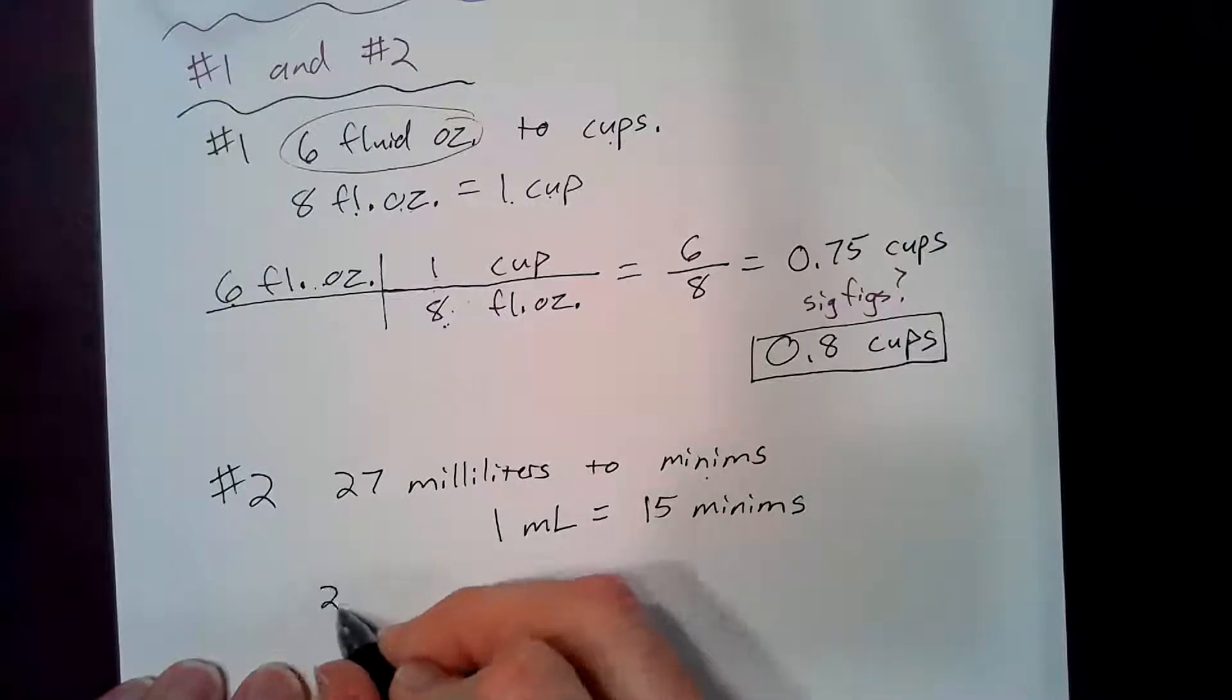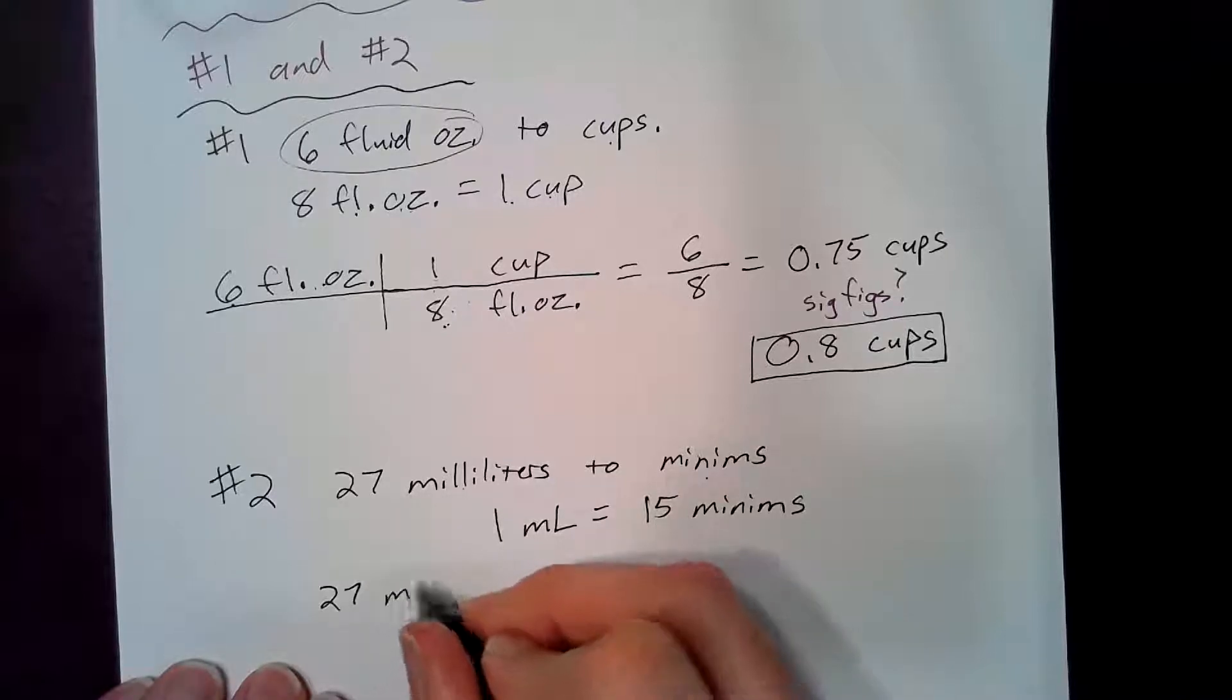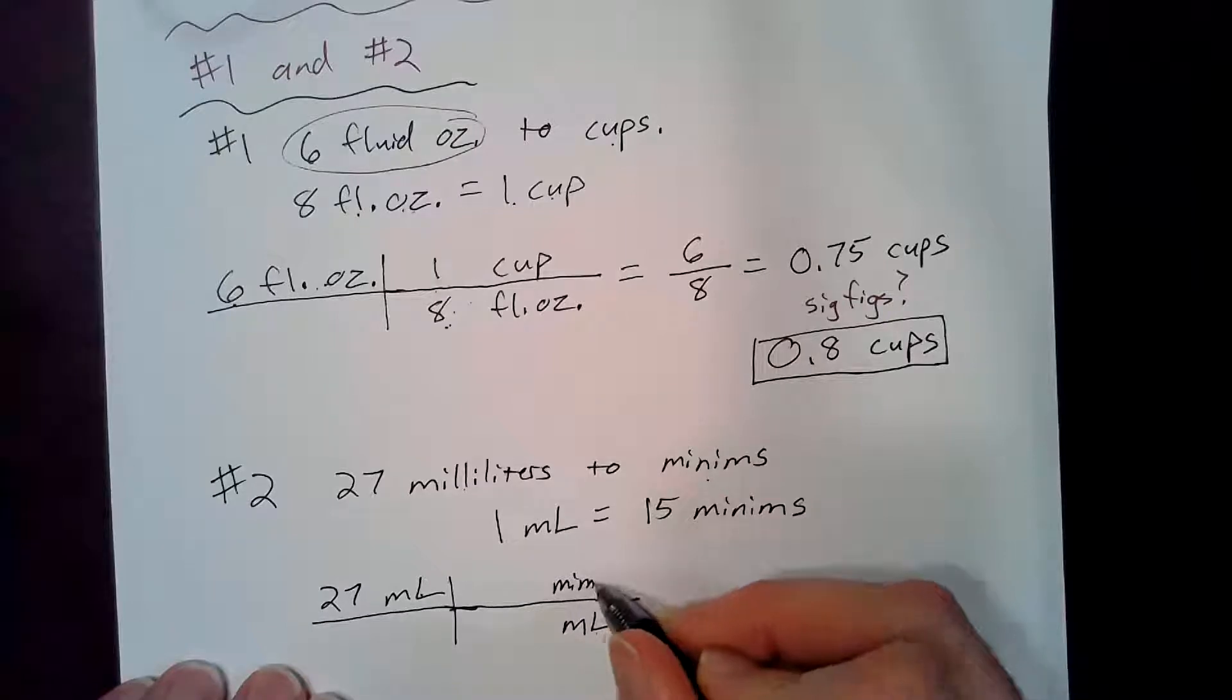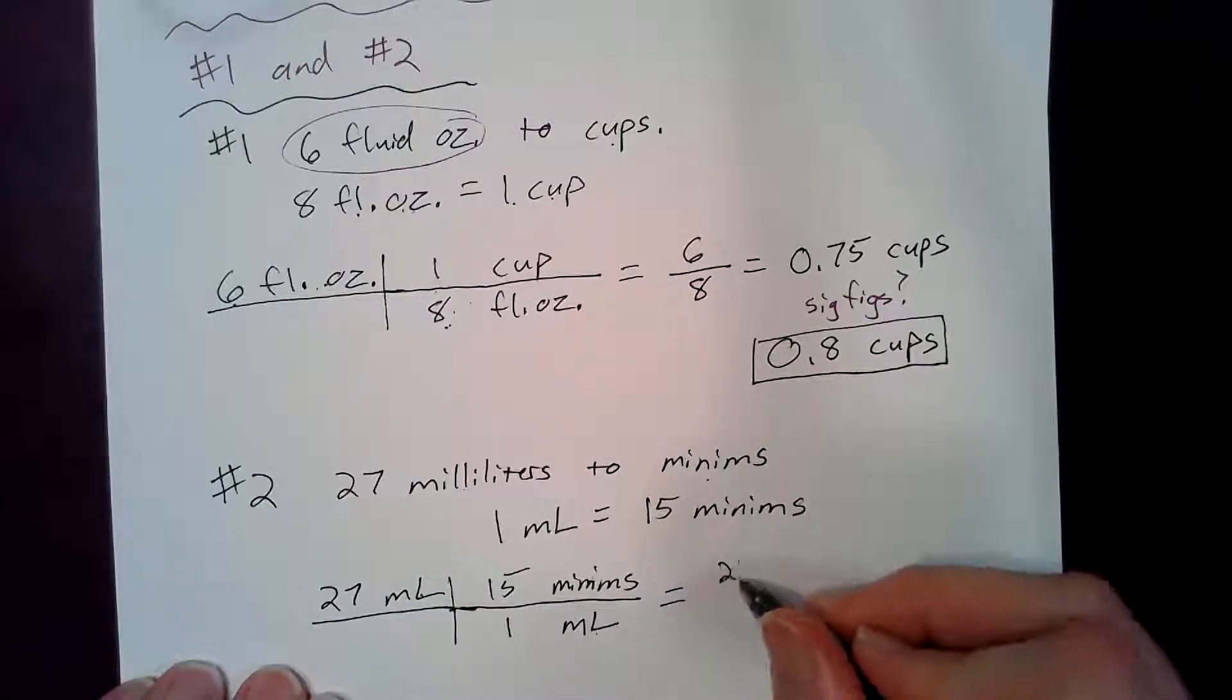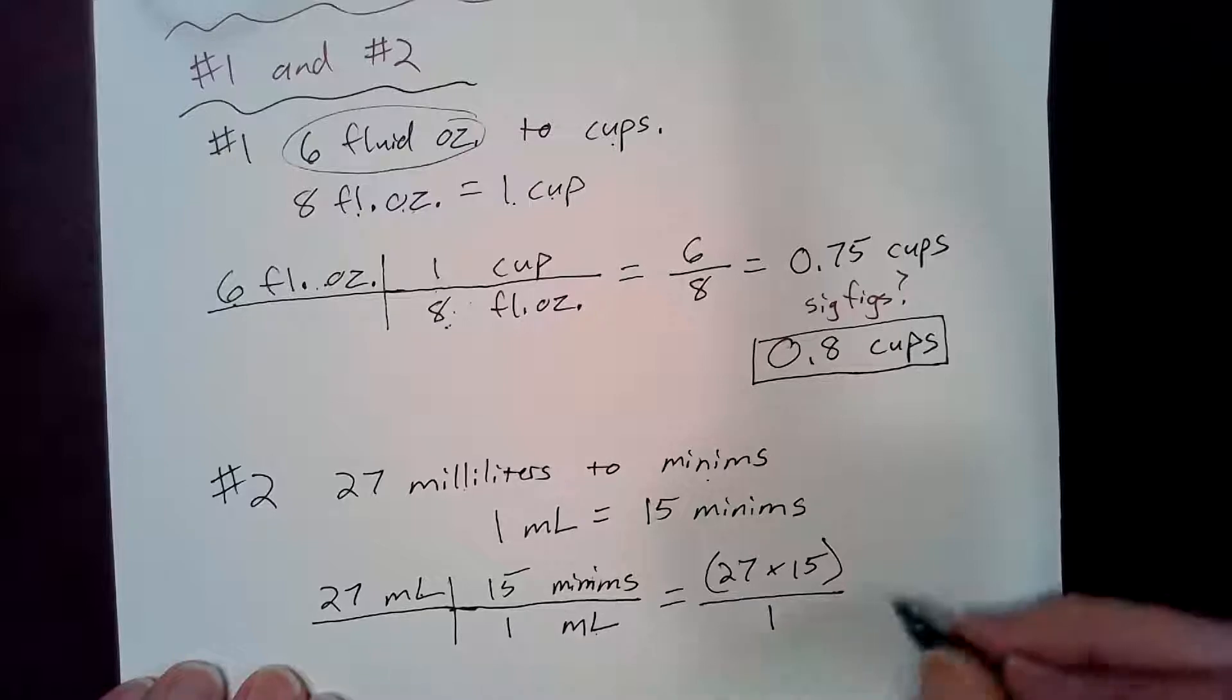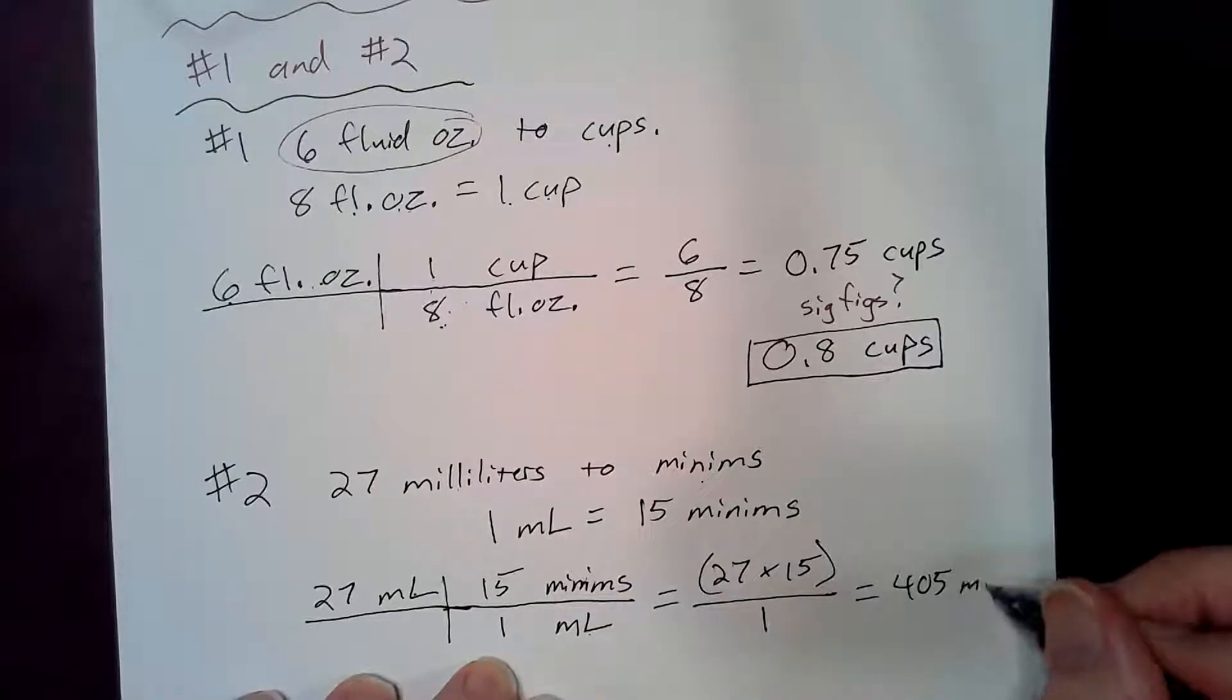So I'll start with my known information so twenty seven milliliters and then I'll apply my railroad tracks and take my units here and put them down here and move to milliliters and then I'll put minims on top. There is one milliliter in fifteen minims and so now that comes out to twenty seven times fifteen divided by one. Now that will equal four hundred and five minims.